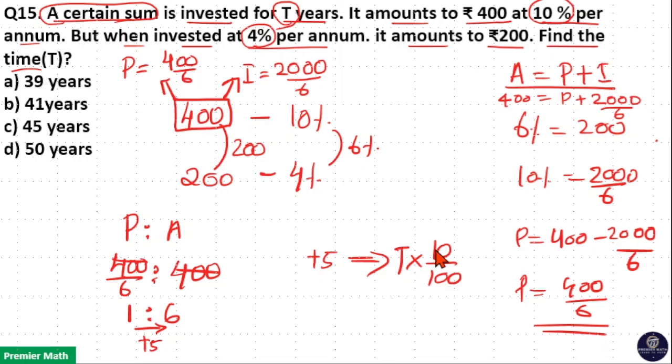Now, zero zero cancelled, T is equal to 5 into 10, 50 years. So, option D is your answer.